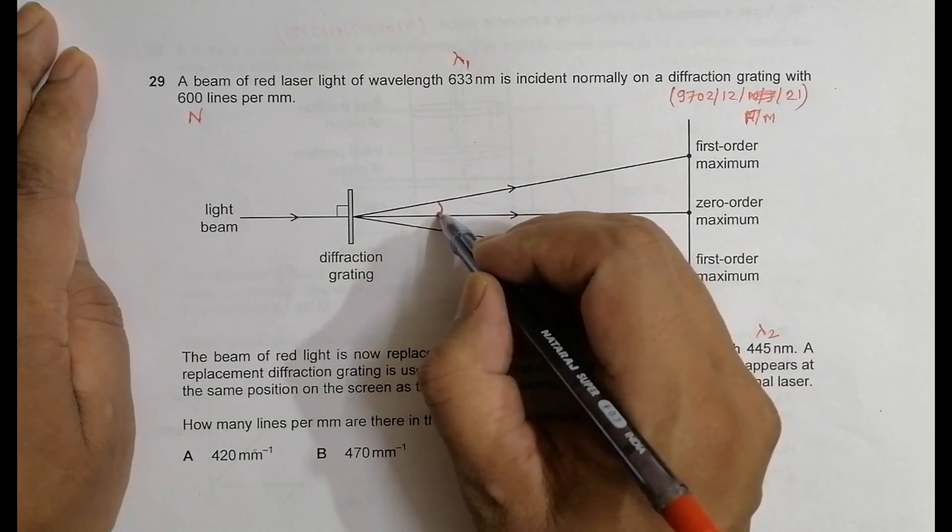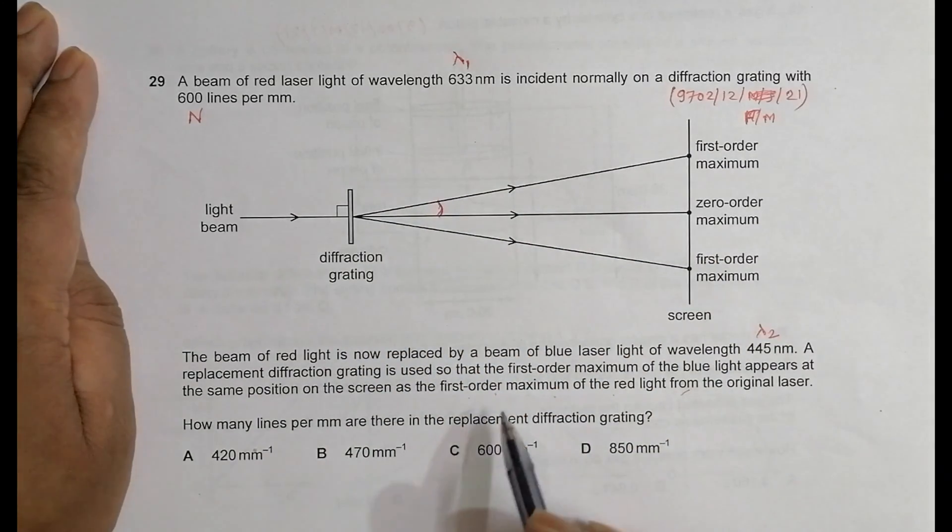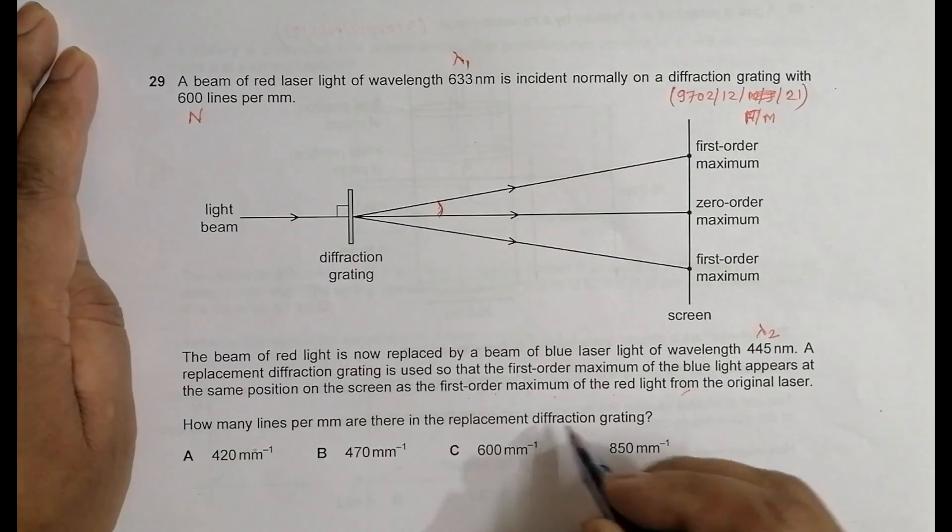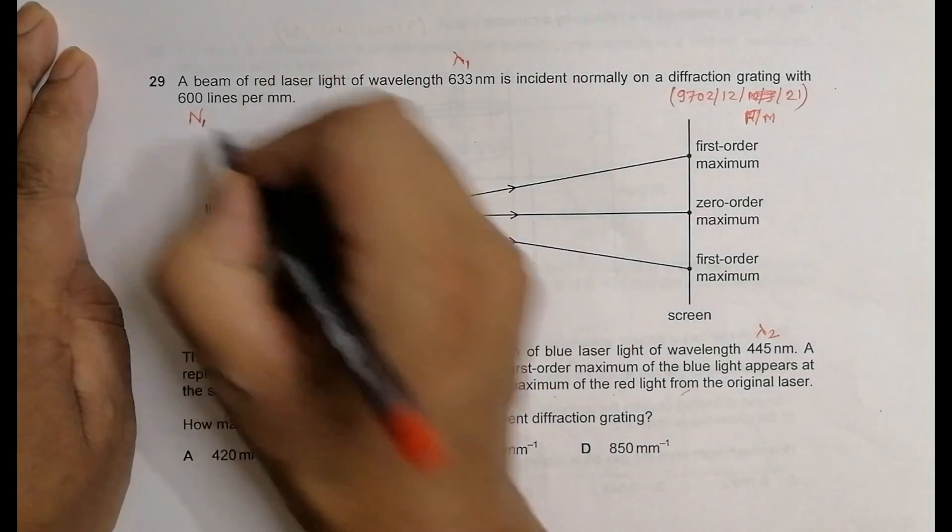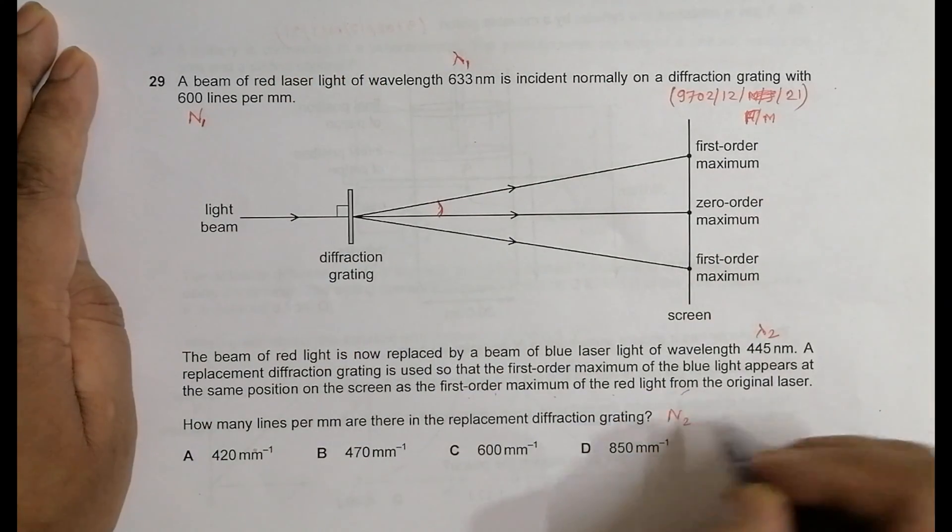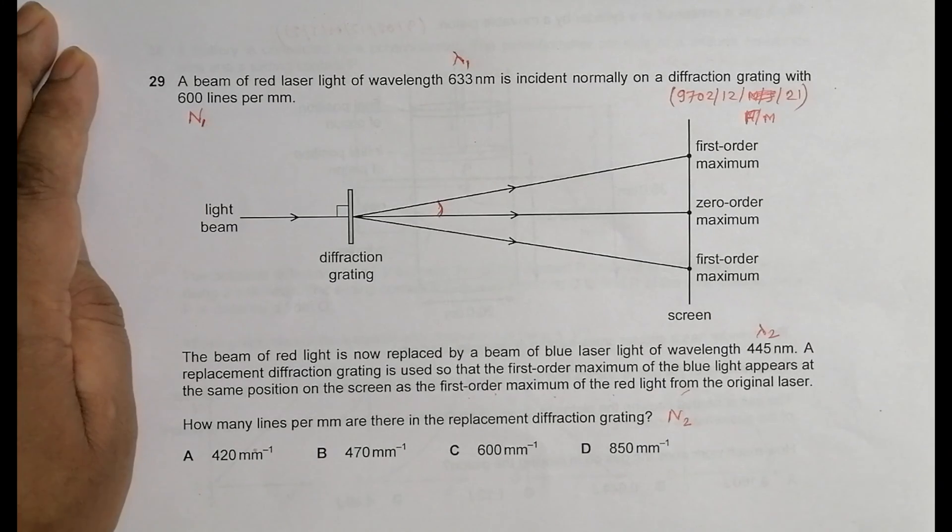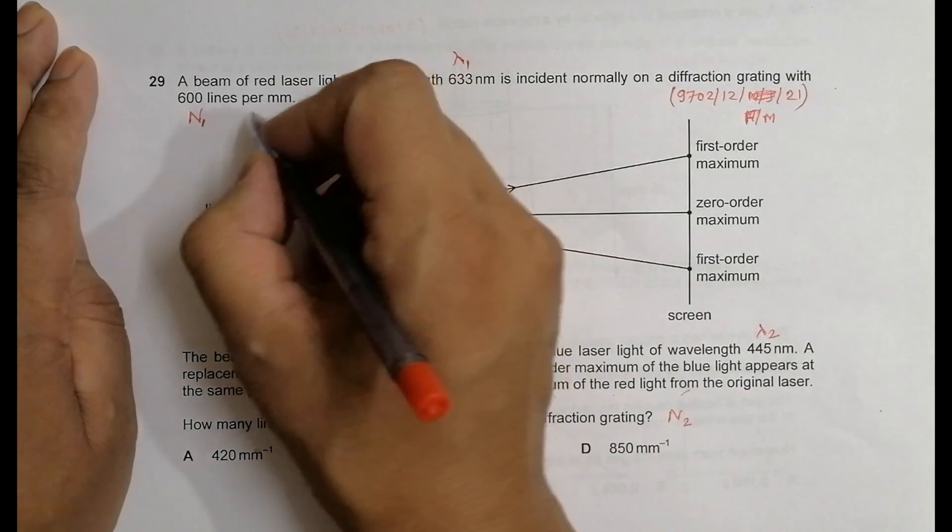Now we have to find how many lines per millimeter are there in the replacement diffraction grating. So here it is n—we have another n here, so it is n1 and this is n2, and we need to find this n2. Let's go for the equation: d sine theta equals n lambda for a diffraction grating.